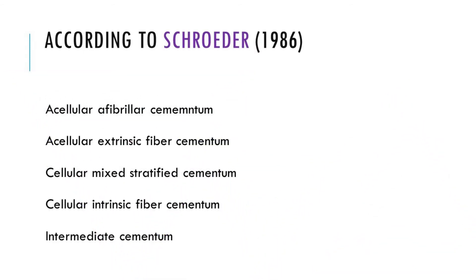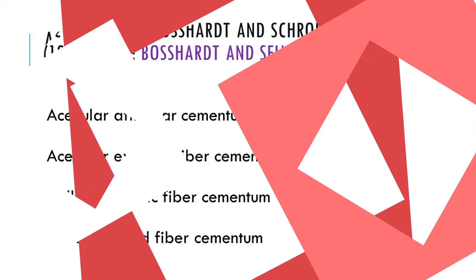Schroeder in the year 1986 classified cementum as: acellular afibrillar cementum, acellular extrinsic fiber cementum, cellular mixed stratified cementum, cellular intrinsic fiber cementum, and intermediate cementum.